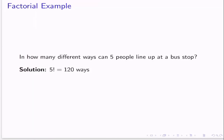They ask: in how many different ways can 5 people line up at a bus stop? The answer is 5 factorial, which equals 120. We can find this by using our calculator or by writing out 5 times 4 times 3 times 2 times 1 and recognizing that equals 120.